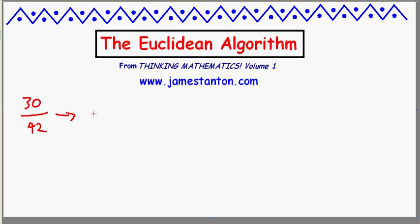You could do the following: take the two numbers, keep the smaller of the two as it is — so I'll keep 30 as 30 — but adjust the larger by subtracting the smaller number from it. So 42 minus 30 gives me 12. Now I've got the numbers 30 and 12. Let's repeat the algorithm: keep the smaller of the 2, in this case 12, but adjust the larger by subtracting the smaller from it. 30 take away 12 is now 18. Now ask for the greatest common factor of 12 and 18.